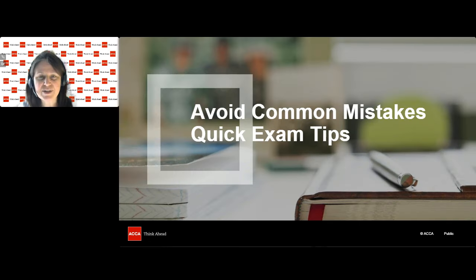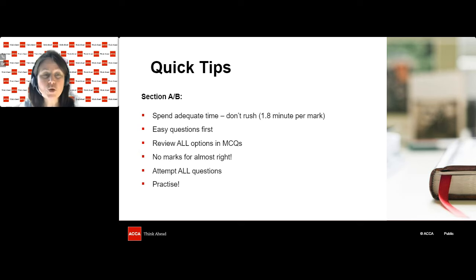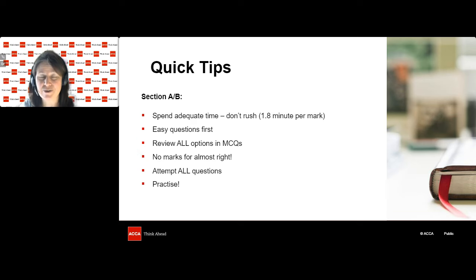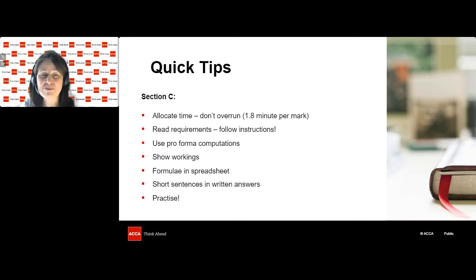A few quick tips: for Section A, spend 1.8 minutes per mark — 54 minutes total. Do the easy questions first and flag harder ones to come back to. Review all options for multiple choice to avoid simple traps. No marks deducted for wrong answers, so have a go at everything. For Section C, allocate your time, follow the instructions, use pro forma computations, show your workings, use formulae in the spreadsheet, keep written answers short, and practice as much as possible.